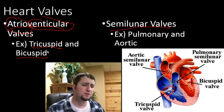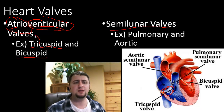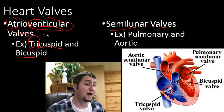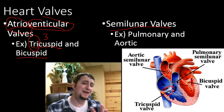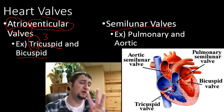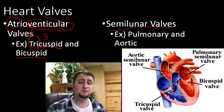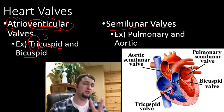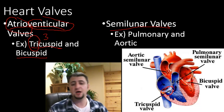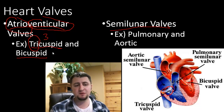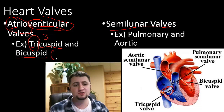They are called the tricuspid valve because the root word tri means three — the tricuspid valve is anchored in three different places. The bicuspid valve is anchored in two different places; bi means two. The bicuspid valve is also sometimes referred to as the mitral valve.